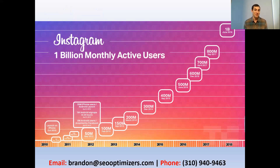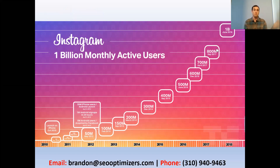If you look back in 2012, Instagram had 50 million users. In 2015, they had 400 million users. Now they have over a billion users — that was back in 2018, and in 2020 there's even more. It's not really slowing down; Instagram is growing and growing.